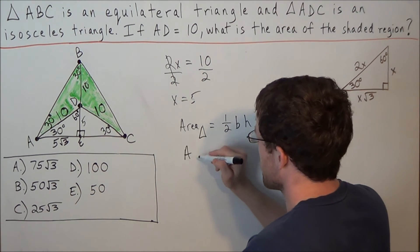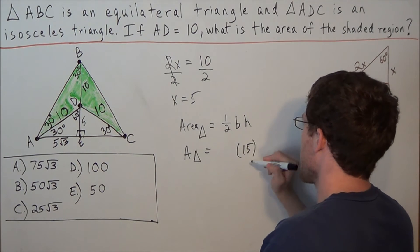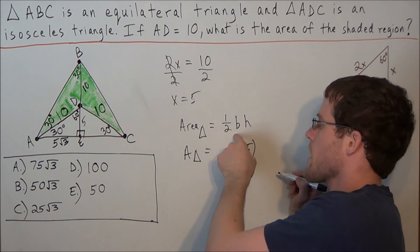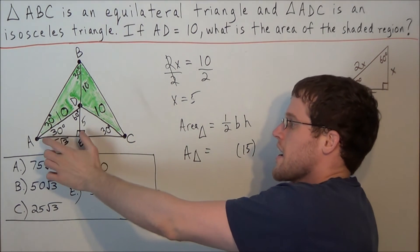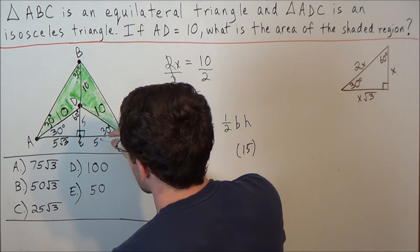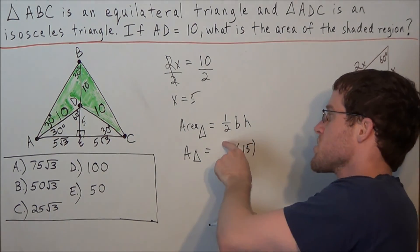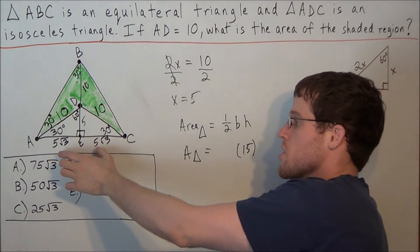So we have a height of 15. And now let's analyze what do they mean by one half the base. Well notice that AE and EC are equal in length.